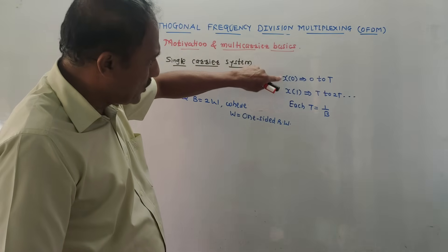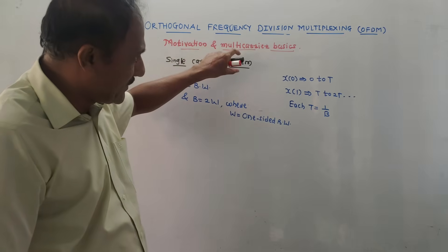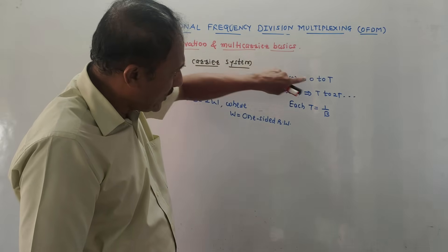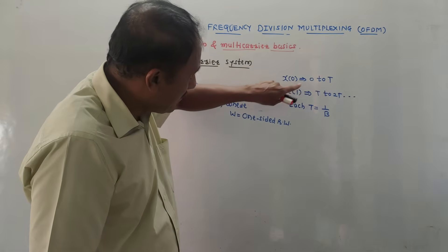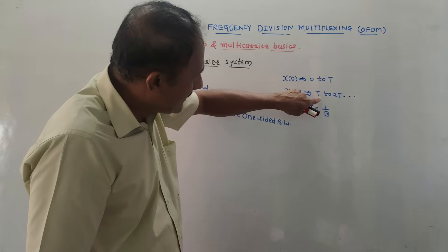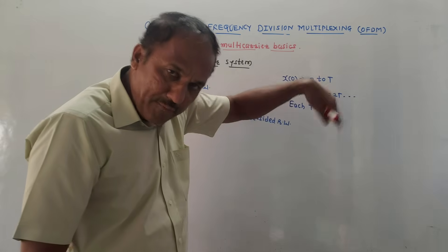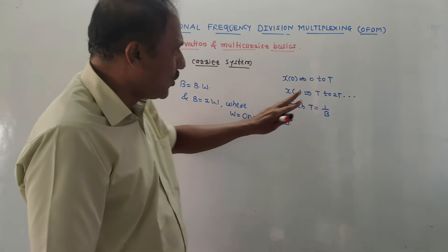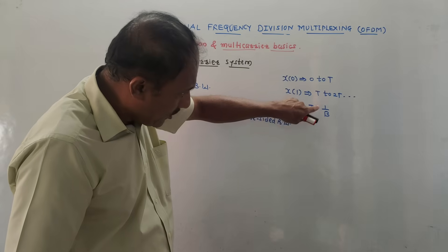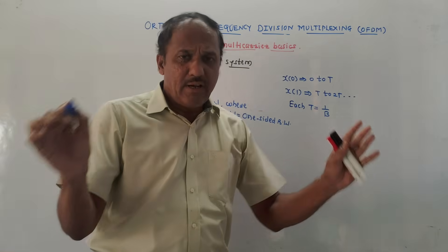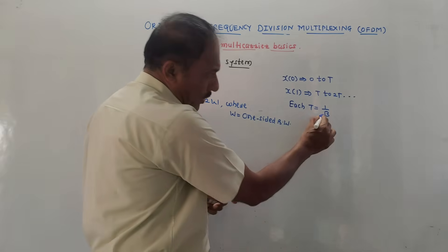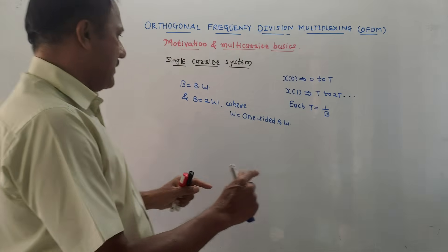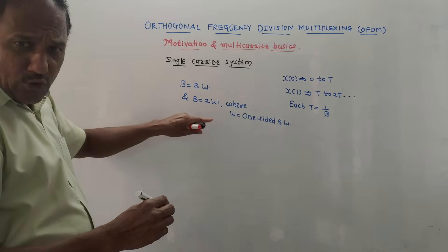For example, if we have different symbols x0, x1, and we want to transmit using a single carrier system, then the time period required to transmit symbol x0 is from 0 to t. After that, x1 is transmitted from t to 2t, and x2 from 2t to 3t and so on. Here every t is the reciprocal of 1 by B — time is reciprocal of frequency.